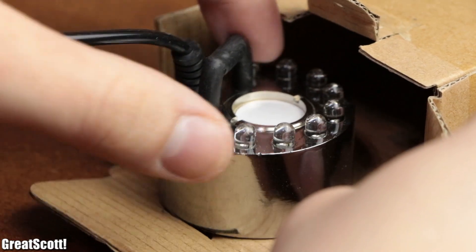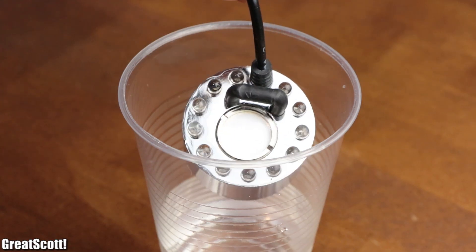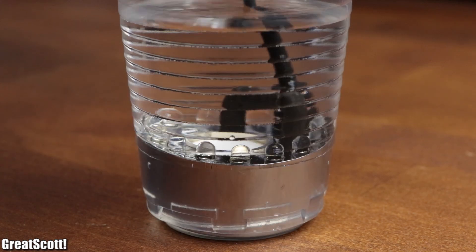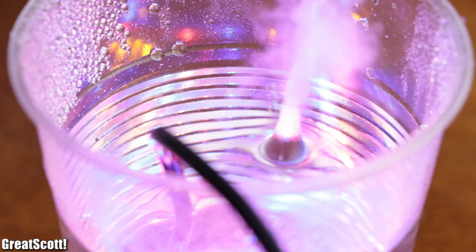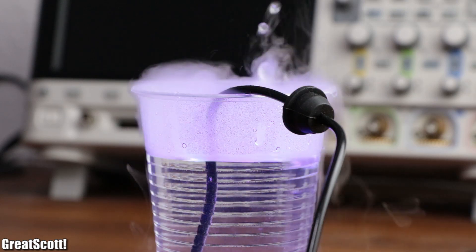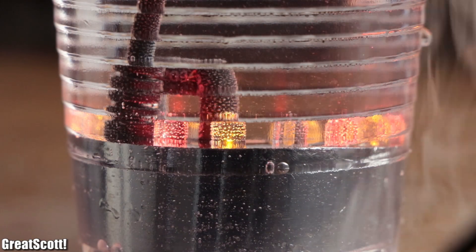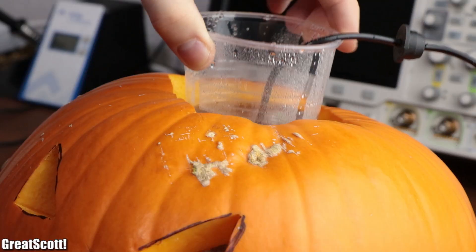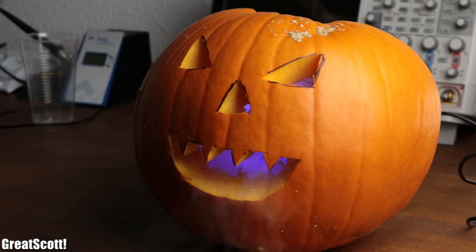A better alternative would be a so-called ultrasonic mist maker. By placing it inside a container filled with water and powering it with a 24-volt power source, it creates a small water fountain along with a thin layer of fog. Of course, the LED light show is a nice bonus, but the main point of this gadget is that by positioning it inside the pumpkin, it makes it look a lot more interesting.